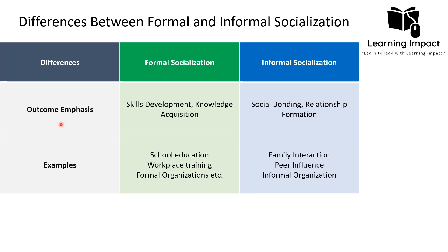Regarding outcome emphasis: the outcome of formal socialization is to acquire specific skills and knowledge. For example, in a university classroom setting — a formal setting — one learns communication skills such as how to ask a teacher a question or respond to a teacher's question. Beyond skills, there is also knowledge acquisition, meaning one gains knowledge in the particular subject they are studying.